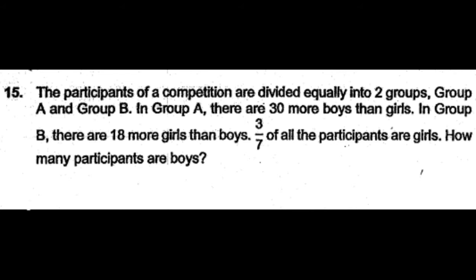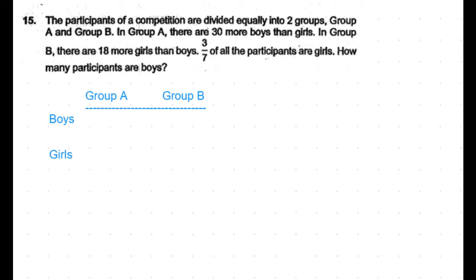The participants of a competition are divided equally into two groups: Group A and Group B. In Group A, there are 30 more boys than girls. In Group B, there are 18 more girls than boys. Three-sevenths of all the participants are girls. How many participants are boys?